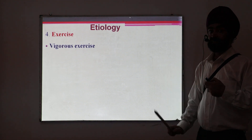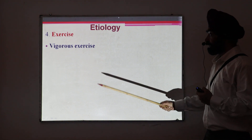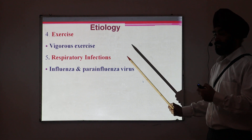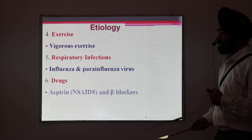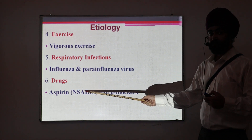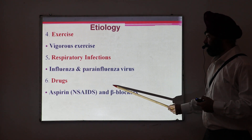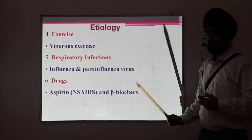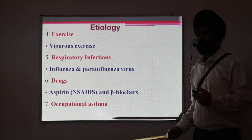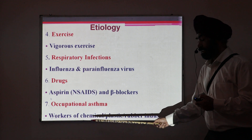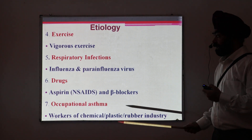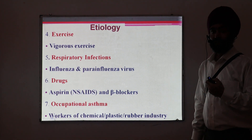Then exercise: if a person is asthmatic and does vigorous exercise, it may lead to precipitation of asthma. Then respiratory infections — viral infections like influenza or parainfluenza virus may also precipitate an attack of asthma. Drugs: if a person is taking NSAIDs or aspirin, which is a common drug for headache relief, it may lead to the development of asthma — I will discuss how in my next lecture. Beta blockers can also lead to asthma in susceptible persons. Then occupational asthma: persons working in certain industries — like chemical, plastic, or rubber industries — are exposed to pollutants that may lead to asthma. So this is the list of agents that may lead to the development of asthma.